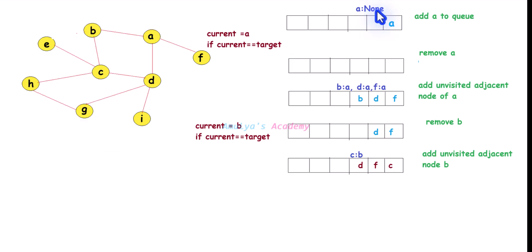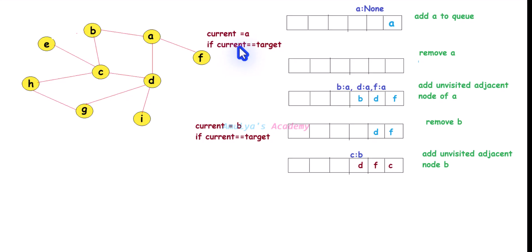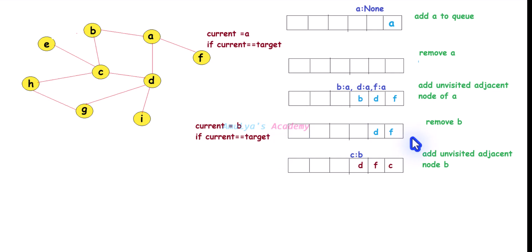Because A is the starting node, I will set its parent node as none, mark it as visited, and add it to the queue. Next, remove the starting node from the queue and check whether that node is the target node. Here A is not our target node, so continue the BFS operation. Take all the unvisited adjacent nodes of A, find their parent node, mark them as visited, and add them to the queue. B, D, F are the unvisited adjacent nodes of A, so their parent node is A.